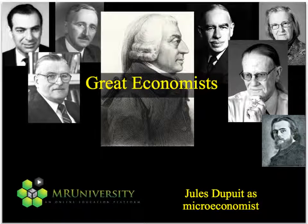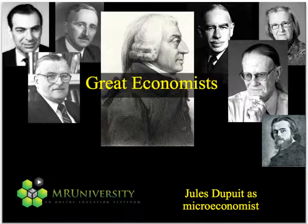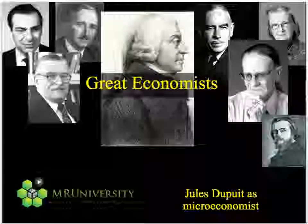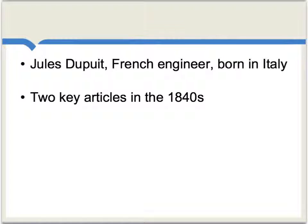Now, let's consider the Frenchman Jules Dupuis and his early seminal contributions to microeconomics. Dupuis was a French engineer, though he was born in Italy, and his two key articles date from the 1840s. In these articles, he laid out a good deal of what was later found in Alfred Marshall and became part of mainstream microeconomics.